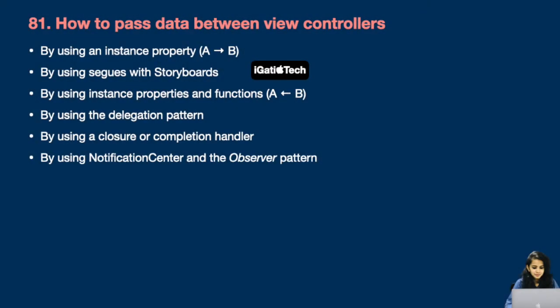Question number 81: How to pass data between view controllers? There are multiple ways of doing this. First, by using an instance property from controller A to controller B. Second, by using segue with storyboards. Third, by using instance properties and functions from view controller B to A. Fourth, by using the delegation pattern. Fifth, by using a closure or completion handler. And last, by using Notification Center and the observer pattern.